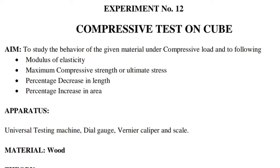Apparatus required: universal testing machine, dial gauge, vernier caliper, and scale. The material taken here for the test is wood.